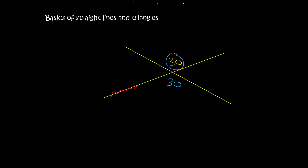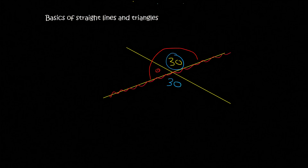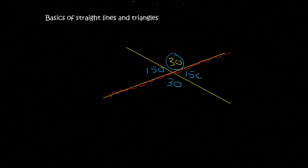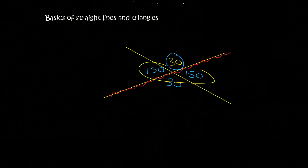Now here we've got a straight line. So that means that these two angles — this one and this one — would have to equal 180 degrees. So that means that this angle inside here would have to be 150 because this one is already 30. So I can fill that in. Then that means that this one would have to be 150 because these two are vertically opposite each other.